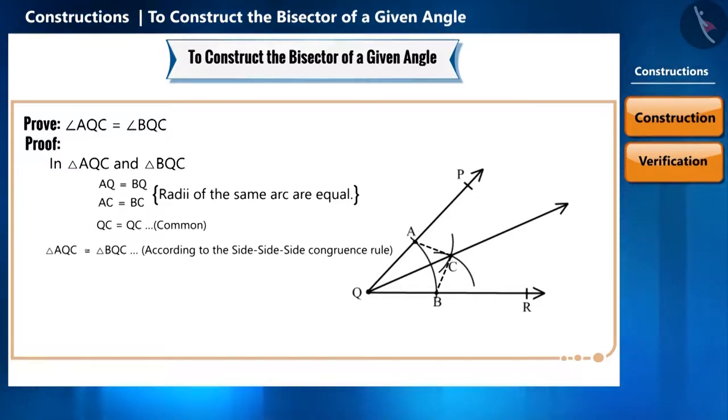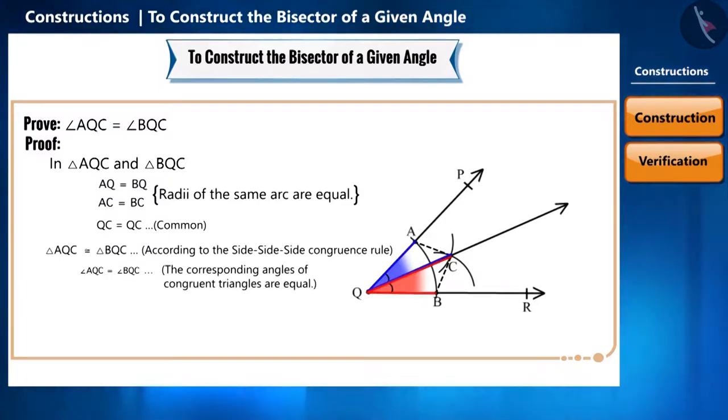And now, we can see that angle AQC is equal to angle BQC because the corresponding angles of congruent triangles are equal. So, not only did we construct an angle bisector, but we also proved that the construction is mathematically correct.